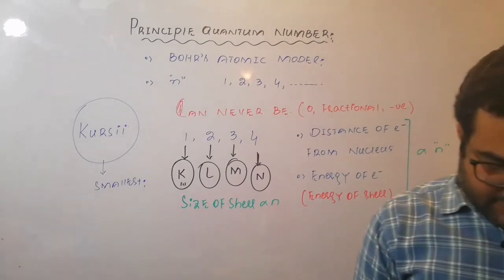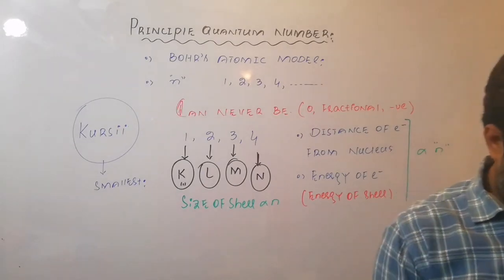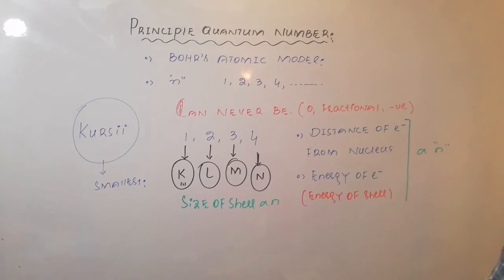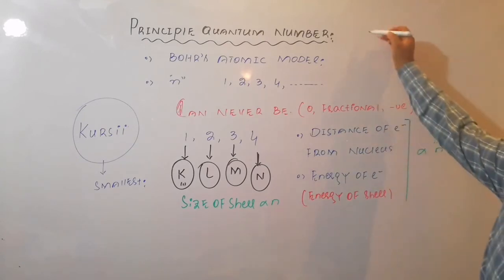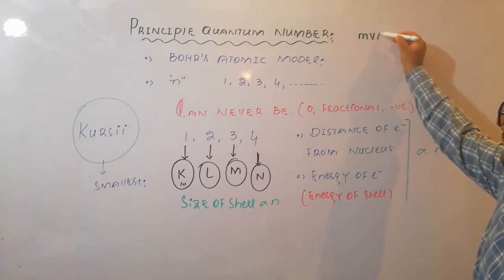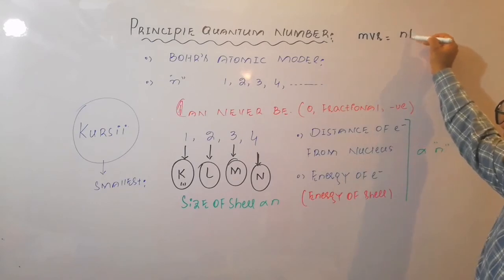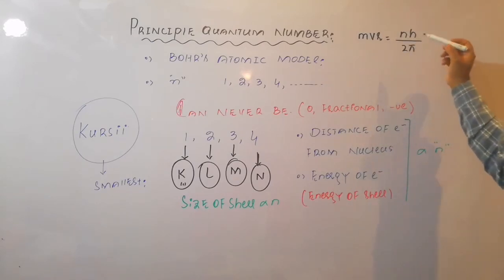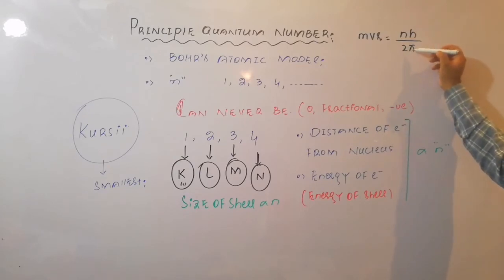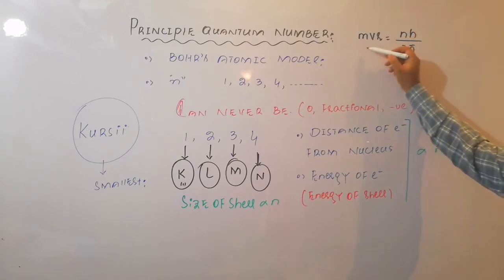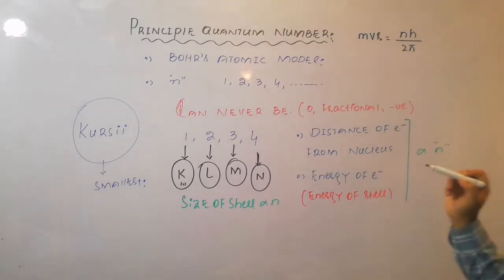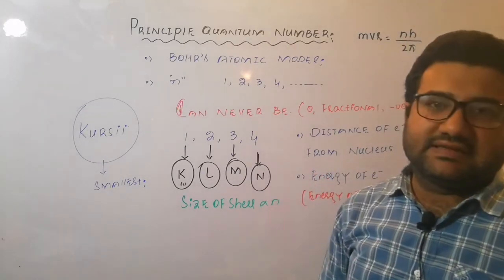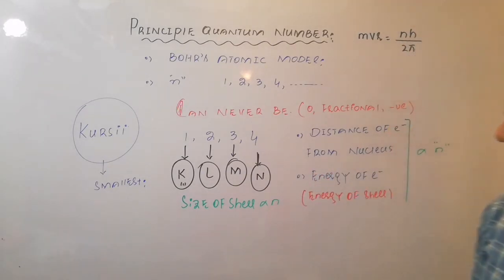Next information provided by the principal quantum number is the angular momentum of electron. MVR equals n·h over 2π. You can see that h, 2, and π are constant, so the angular momentum is solely depending on the value of the principal quantum number. First information, second, third, fourth.